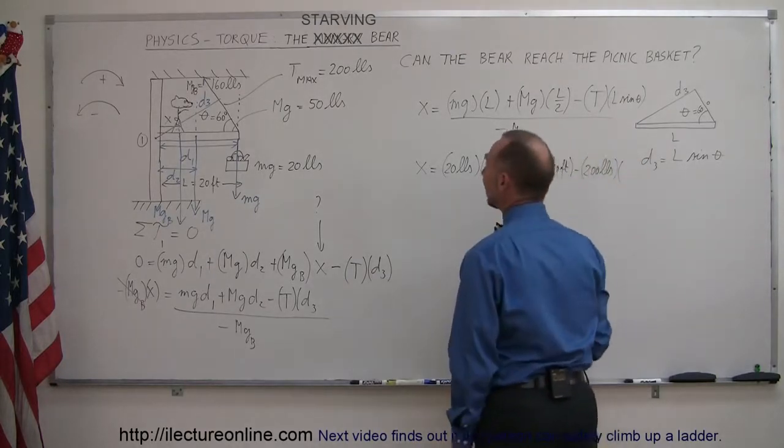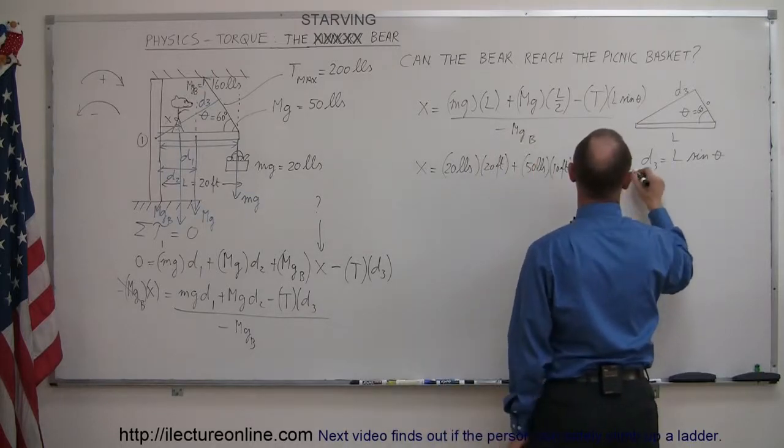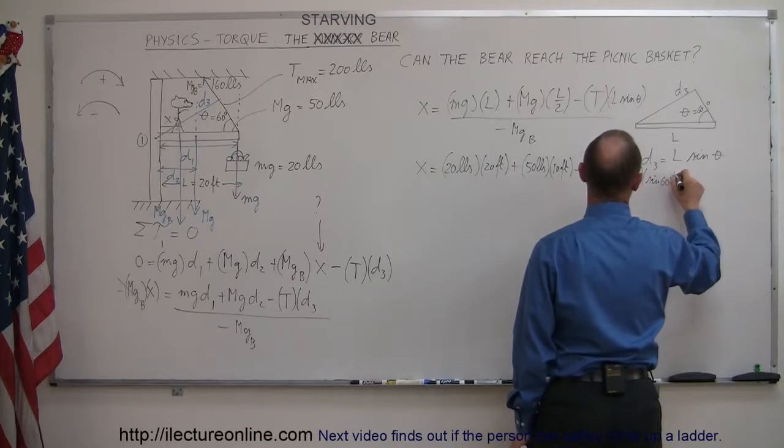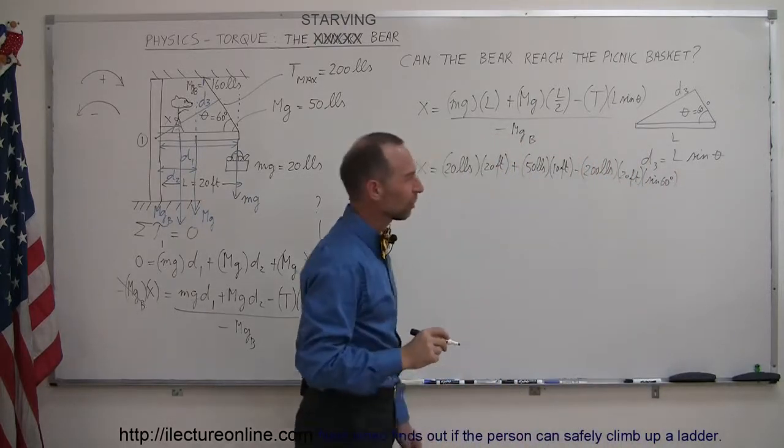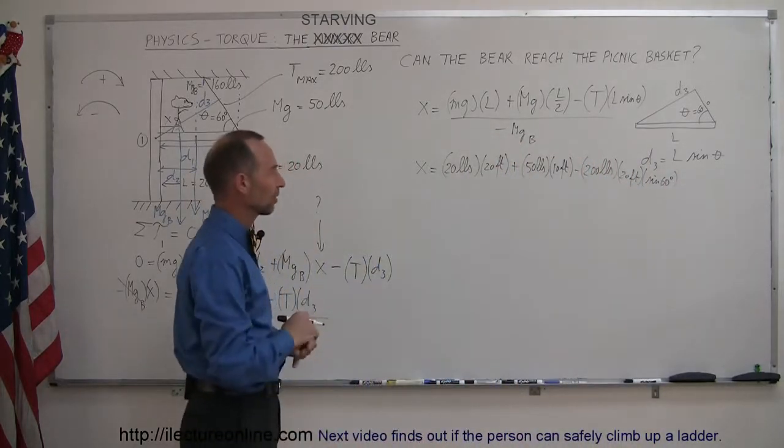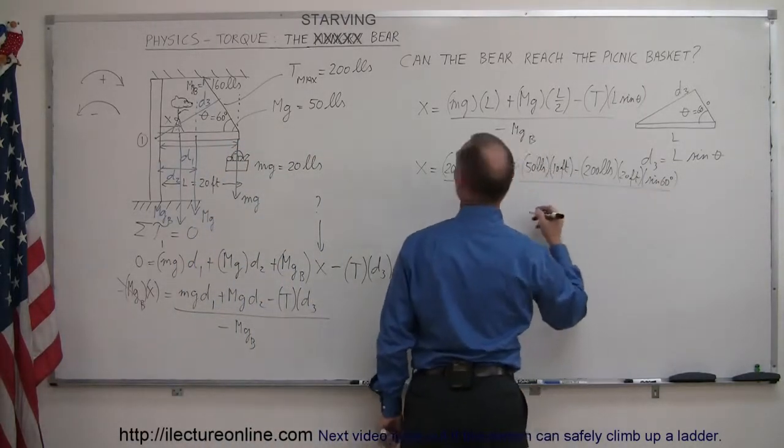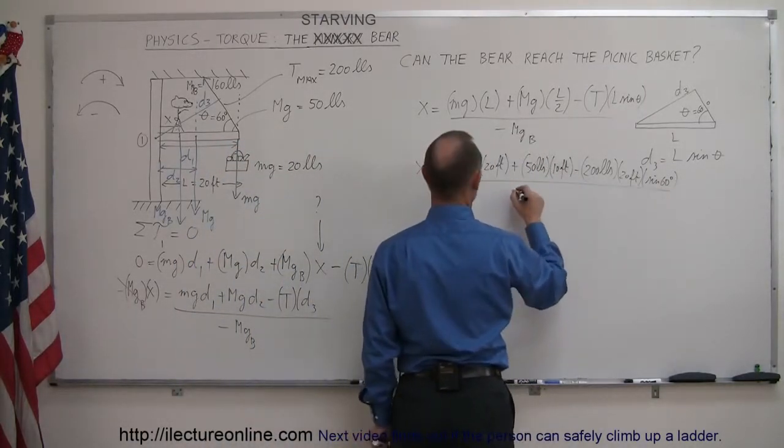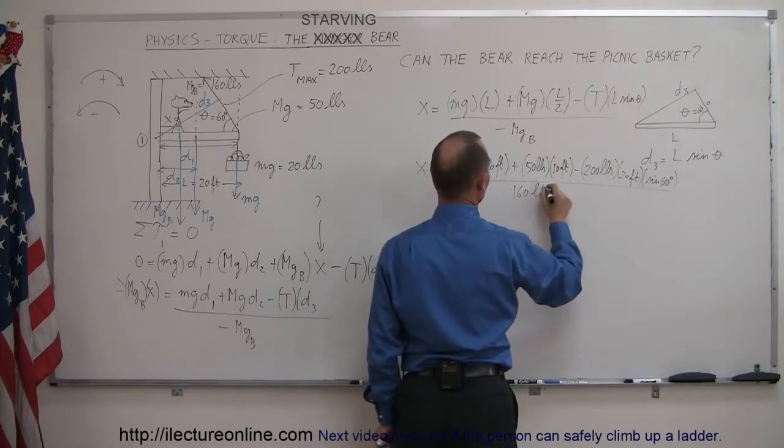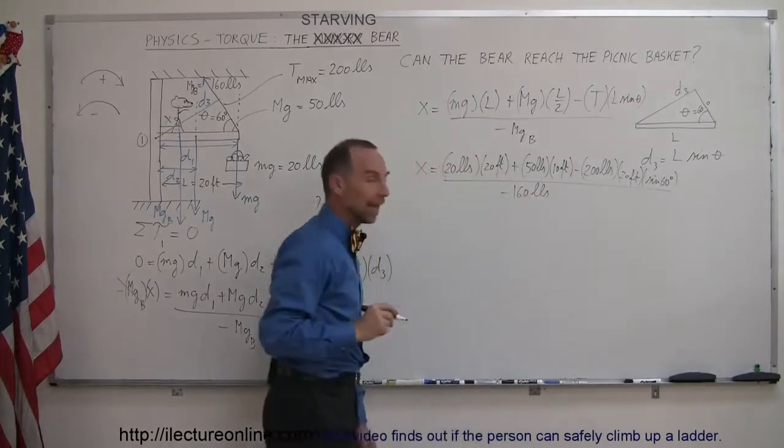Minus the tension. I'm going to put in the maximum tension which is 200 pounds, and multiply it times L which is 20 feet, and times the sine of 60 degrees. If I remember right, the sine of 60 degrees is the square root of 3 over 2, 0.866. Divide the whole thing by the weight of the bear which is 160 pounds. And there was a negative in front of that, can't forget that.